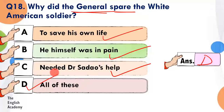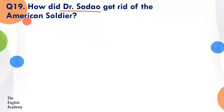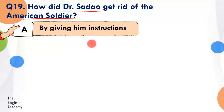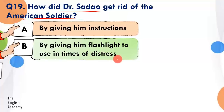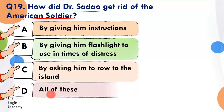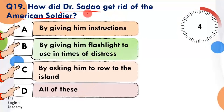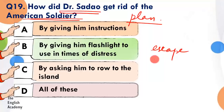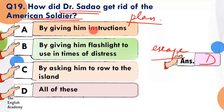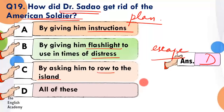Question number 19: How did Dr. Sadao get rid of the American soldier? Option A: by giving him instructions. Option B: by giving him a flashlight to use in times of distress. Option C: by asking him to row to the island. Option D: all of these. The answer is Option D — all of these. Unhone ushe instructions di, saath mein flashlight di taaki signal bhej sake, aur ushe samjhaya ki island tak row karke jao aur waahan se guzarne wali ships ki madad se apni country pahuncho.